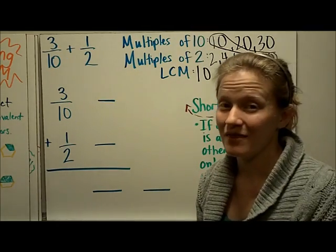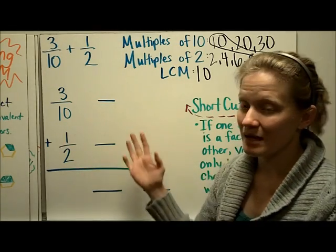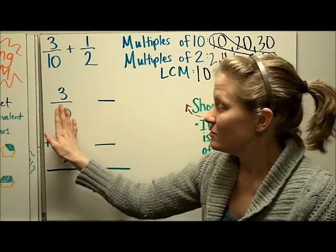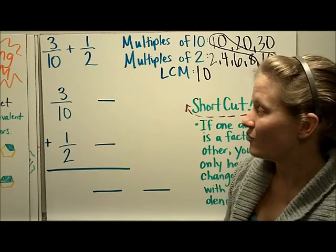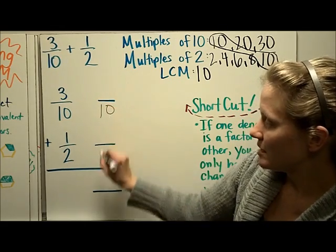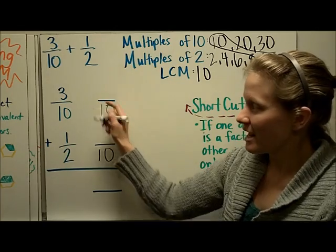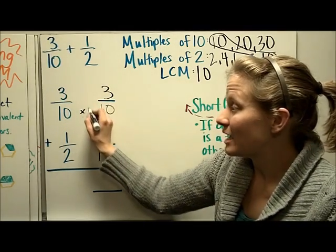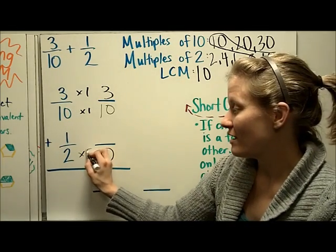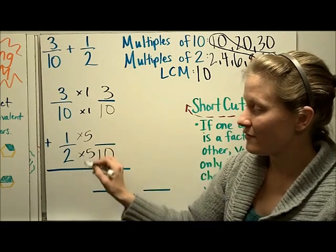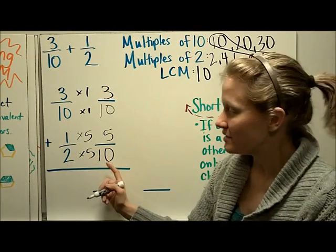So the least common multiple is ten, which becomes the denominator for both fractions. I find it helpful to rewrite problems vertically so you can easily see the new problems you're adding together. My denominator is going to be ten for both fractions. Notice that three-tenths doesn't have to change — the denominator stays the same, so the numerator stays the same. For one-half, how do I get from two to ten? I multiply by five on the denominator, so I multiply by five on the numerator. One times five is five, so one-half equals five-tenths.